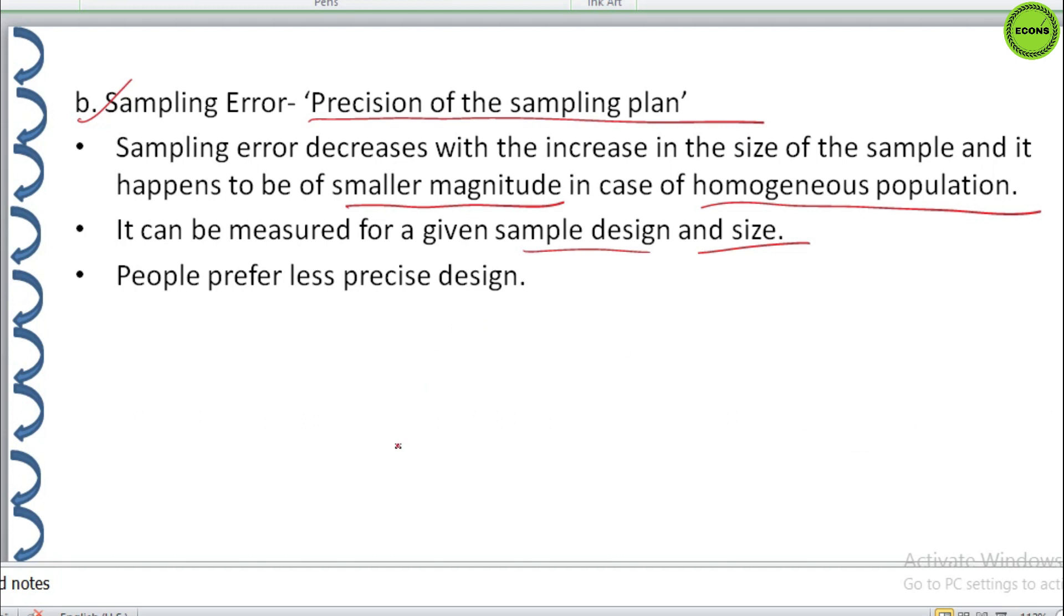If we increase the sample size, the precision can be improved. But, on the other hand, increasing the size of the sample has its own limitation. That is, a large sized sample increases the cost of collecting data and also enhances the systematic bias.